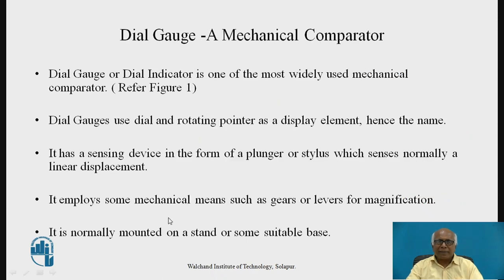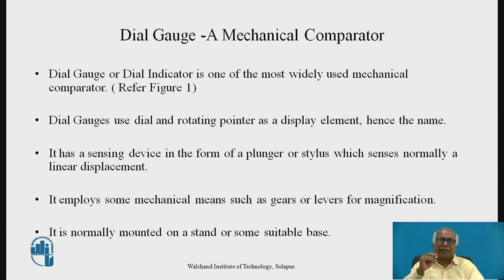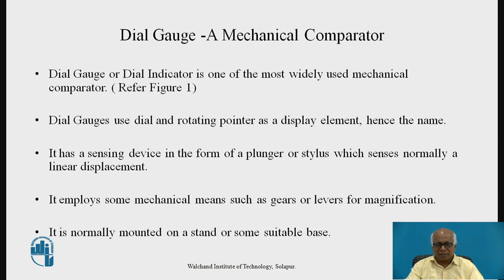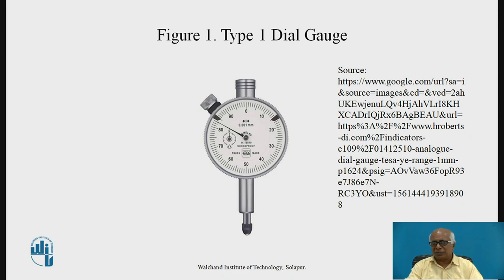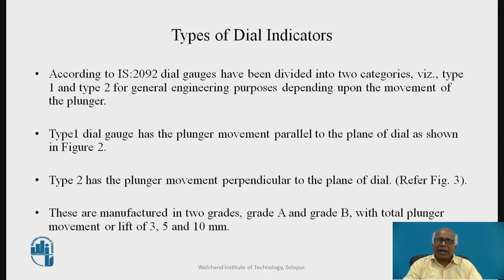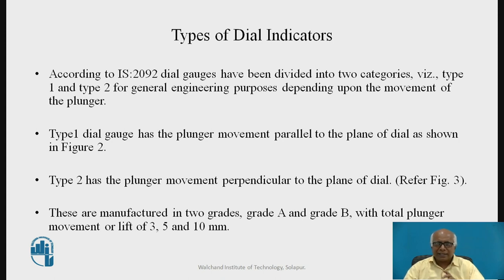It employs mechanical means such as gears or levers, which are inside the casing and are used for magnification. Normally the dial gauge is mounted on a stand or some suitable base. According to IS-2092, dial gauges have been divided into two categories, type 1 and type 2, for general engineering purposes depending upon the movement of the plunger.